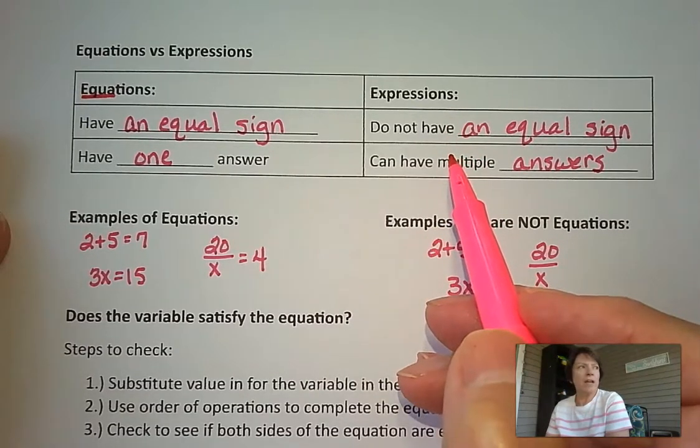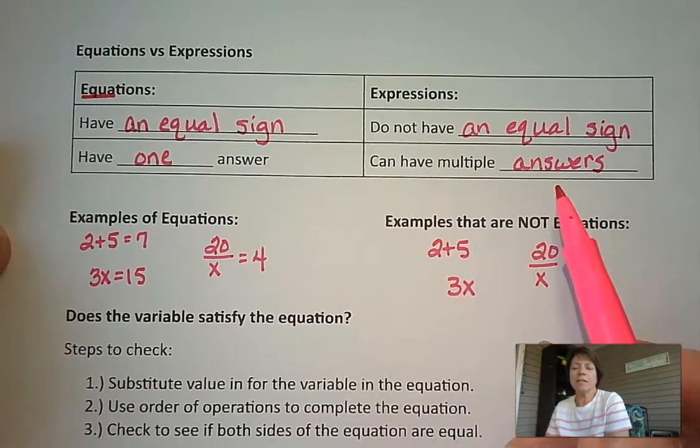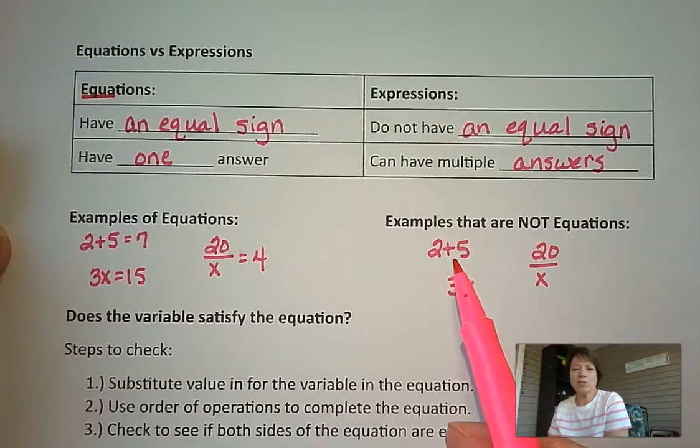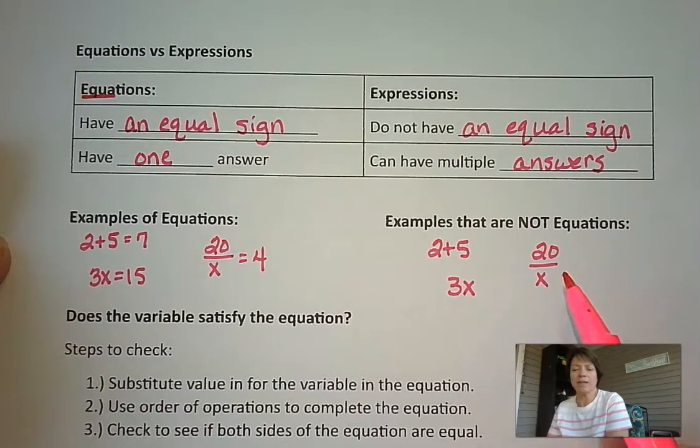We know that expressions do not have an equal sign and that algebraic expressions can have multiple answers. So expressions look like this: 2 plus 5, 3 times x, 20 divided by x.